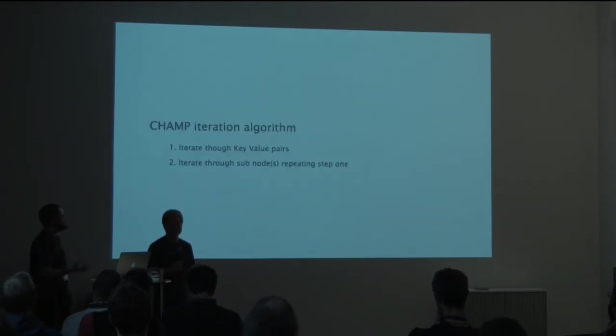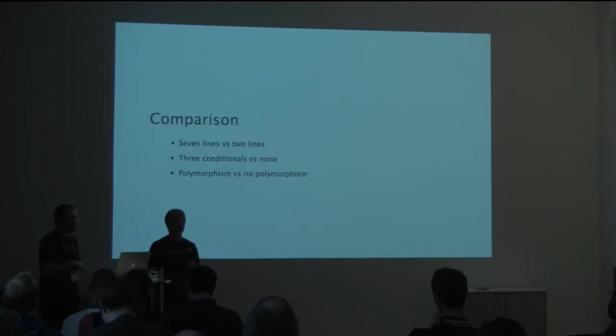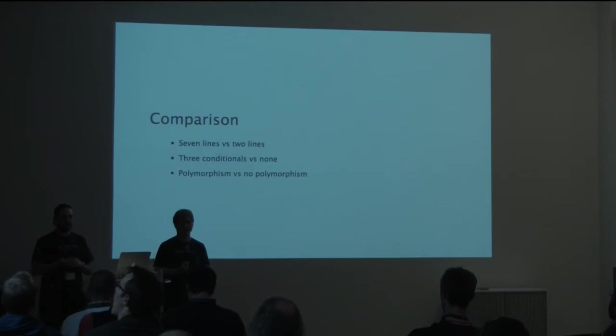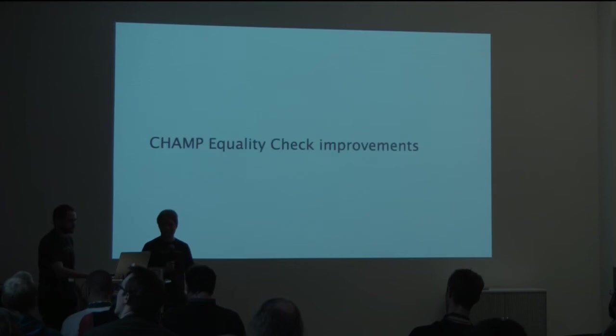So contrast that complicated algorithm that it took me a few minutes to explain with the CHAMP iteration algorithm, which is simply two steps. The first one is iterate through the key-value pairs, which you know about because of the metadata, and then subsequently iterate through the sub-nodes, repeating the first step. So by comparison, you can see that in terms of lines of code, we're comparing seven pseudocode lines of code with two lines. We have removed all of the conditionals in the CHAMP implementation. So we go from three conditionals to none, and we no longer have that subtle polymorphism between regular nodes and the specialized array node data type. So that summarizes how CHAMP improves iteration.